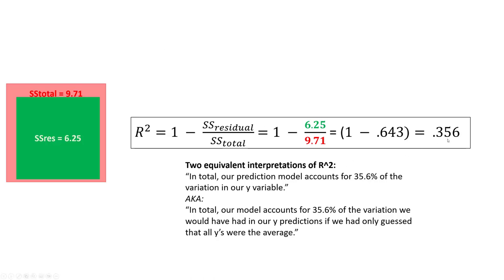The interpretation of 35.6 is simply, in total, the prediction from our model accounts for 35.6% of the variation in our y variable. That tells us something important. We now have this ability to capture some of the variation in our dependent variable. That's a really fancy way of saying we want a model that can predict with some accuracy our dependent variable, the outcome.